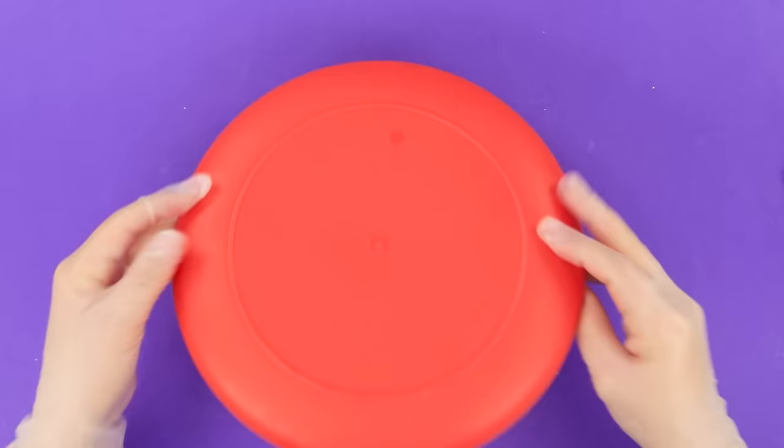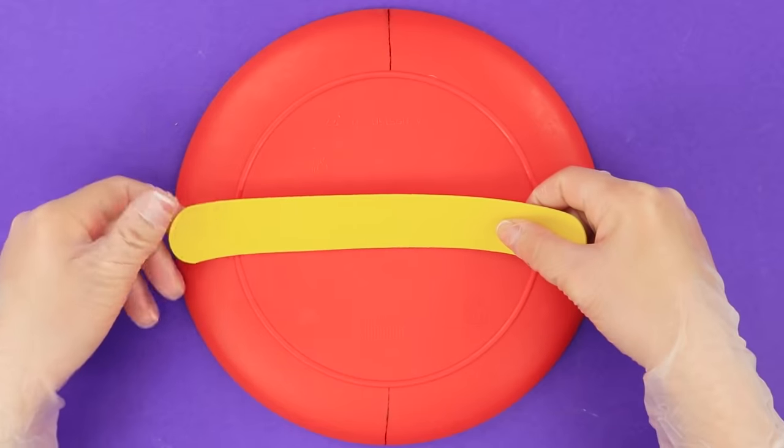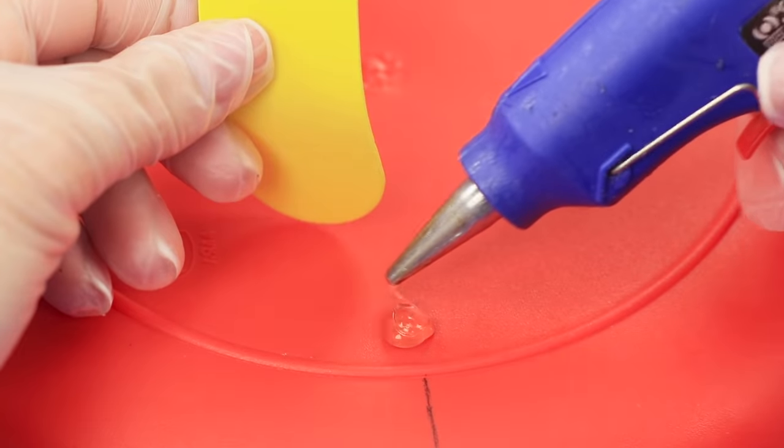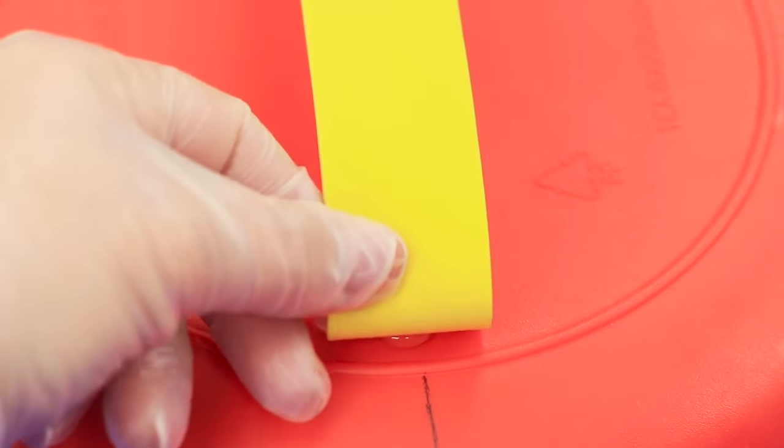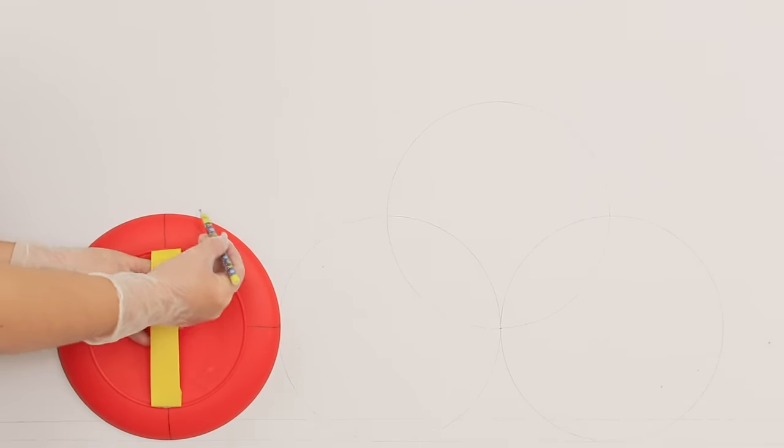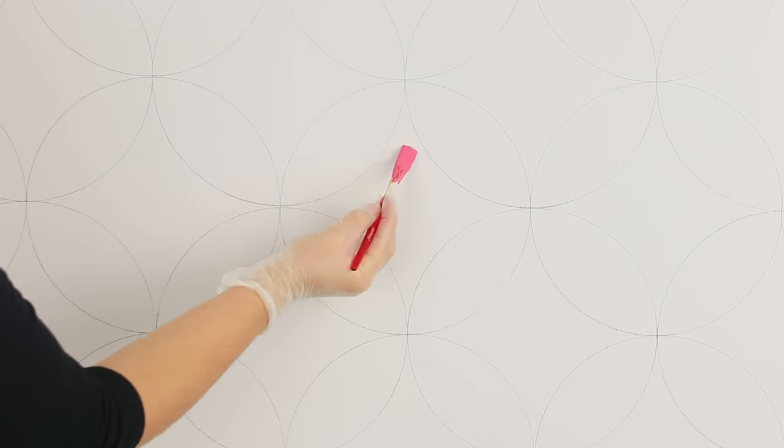Now take a disposable plate. Using a technical pen, mark it up. Glue a handle made out of foam paper using a hot glue gun. Place the plate on the wall and trace it with a pencil. Decorate the space with even rows. And now let's get to work!